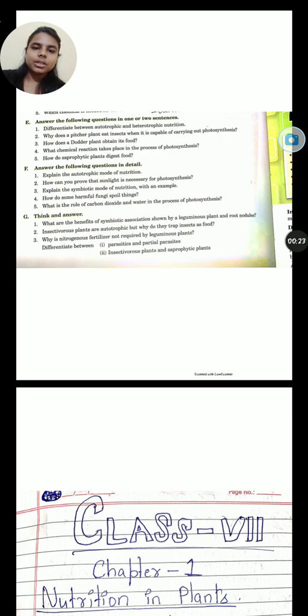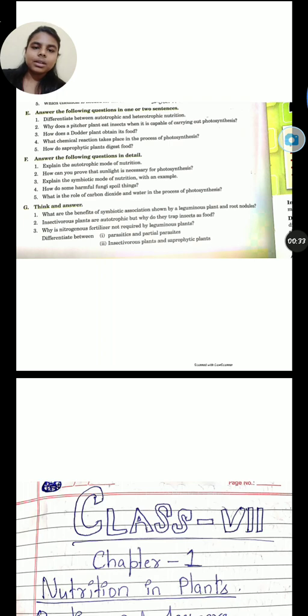There are three types of questions given. The first one is very short, which asks answers in just one or two sentences. The next type is answer in detail and the last one is think and answer. In this segment, we will be doing the questions and answers for question number E, that is answer the following questions in one or two sentences.